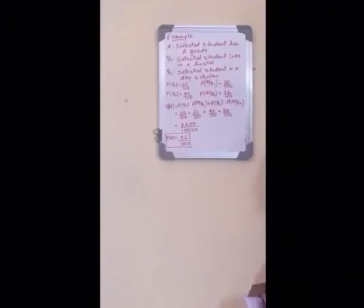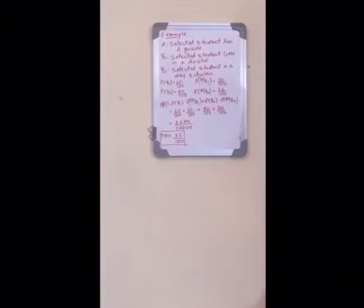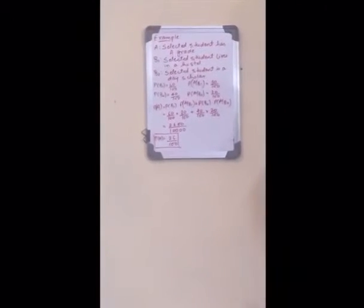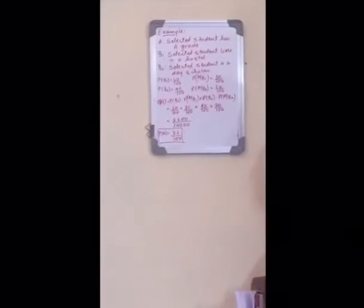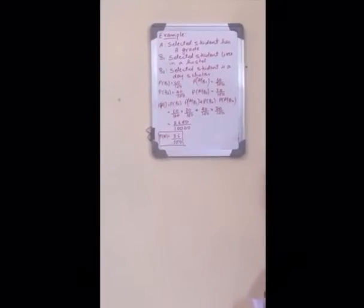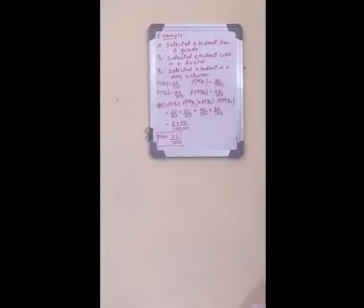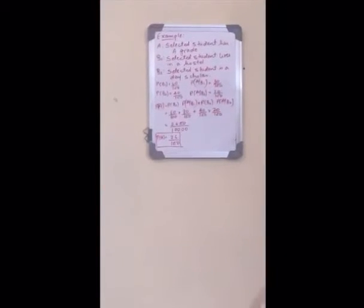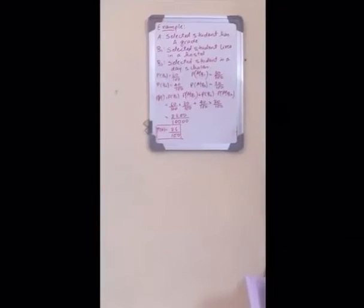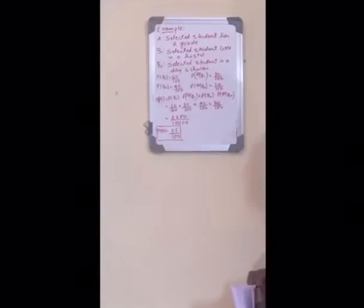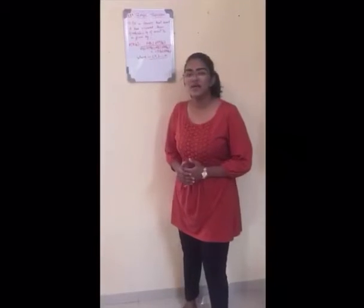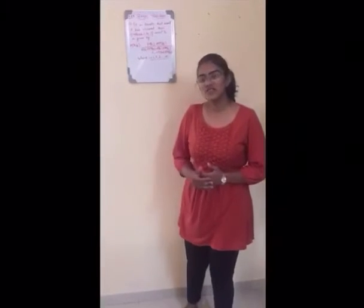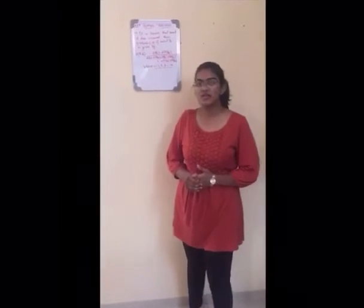Applying the total probability theorem to this question, the probability of event A is given by P(B1)·P(A|B1) + P(B2)·P(A|B2), which finally turns out to be 26/100. So now we have understood the total probability theorem.